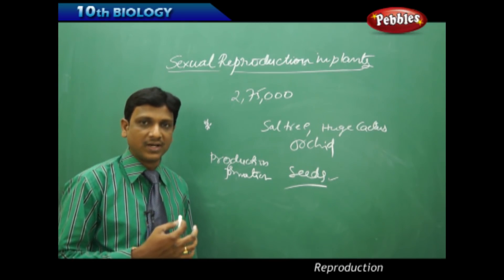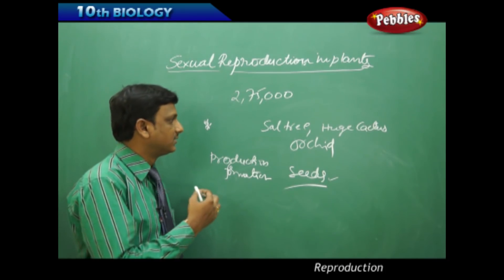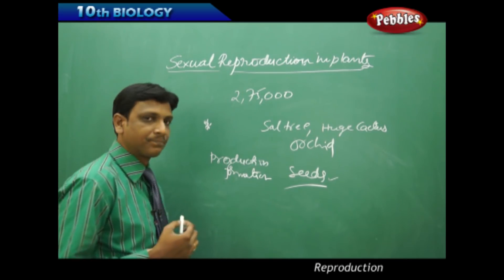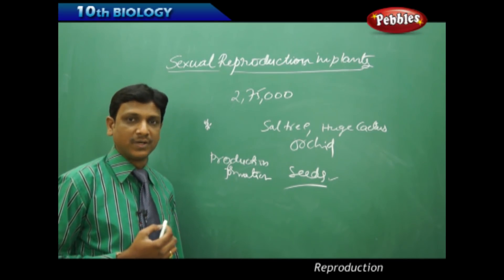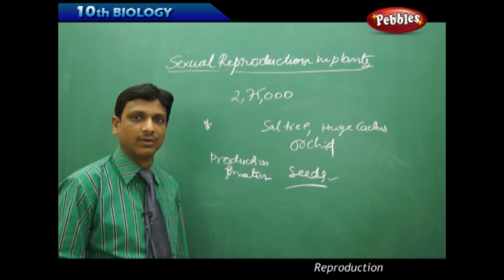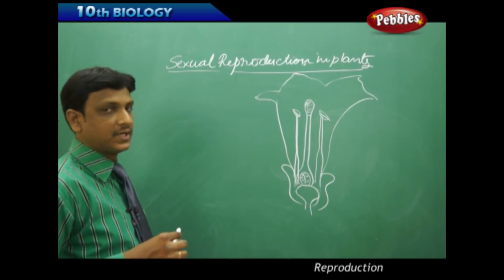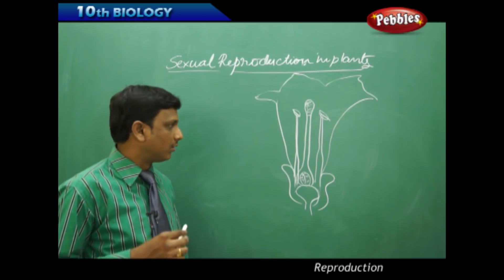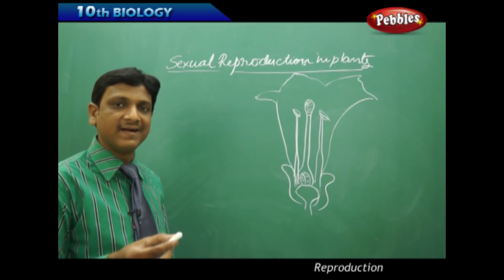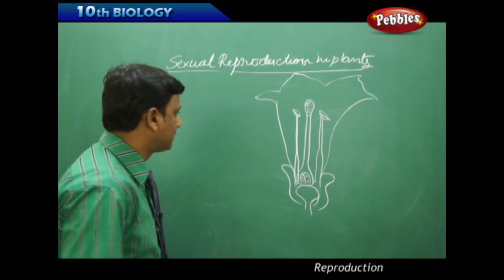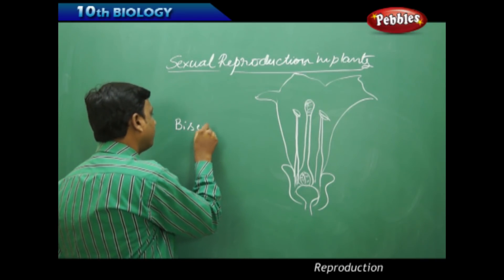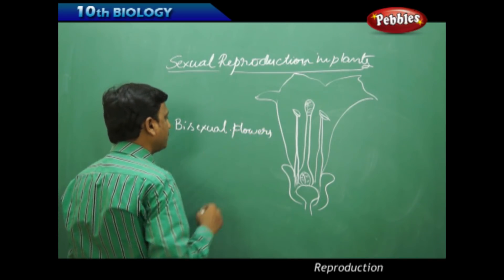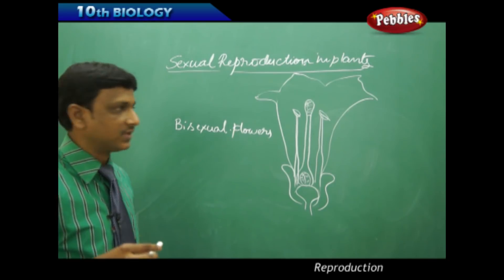Now let us look at the various reproductive parts of flowering plants — the reproductive organs present in the flower. The flower is the reproductive part which consists of male and female reproductive organs. Certain flowers contain both male and female reproductive parts; such flowers are called bisexual flowers.